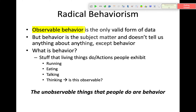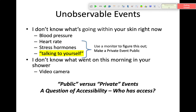But this raises a question about what behavior actually is. Behavior is basically stuff that living things do — actions that people exhibit, like running, eating, talking, and thinking. Thinking is something we do as human beings. But this raises the question: is thinking observable? We're still relying on observable behavior, so how can we observe thinking? The position of the radical behaviorist is that those unobservable things aren't special — they are behavior; we just can't see them.